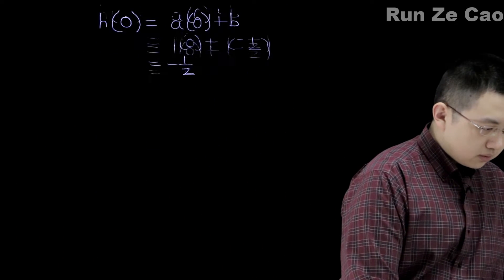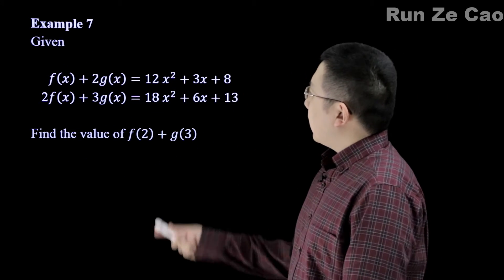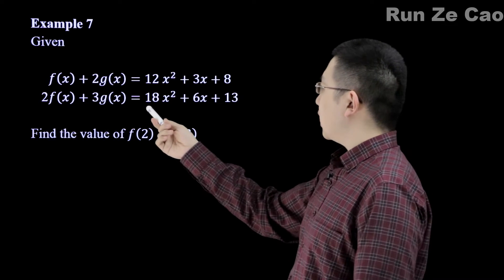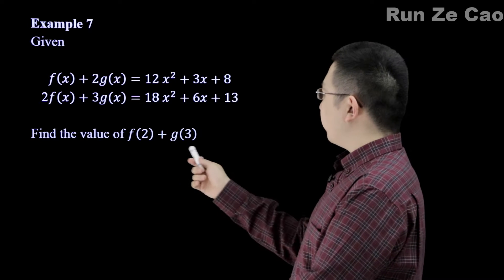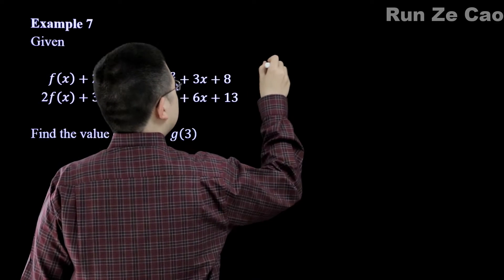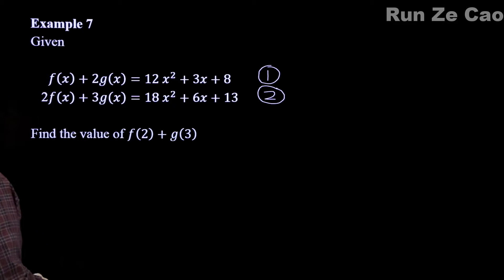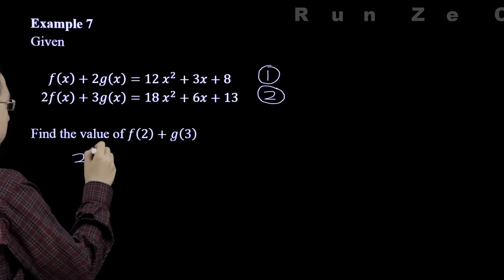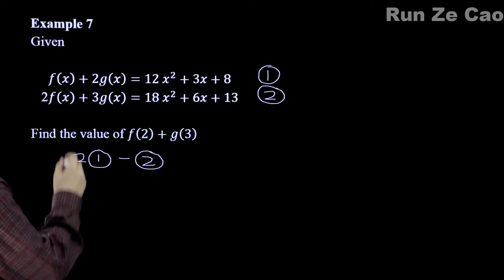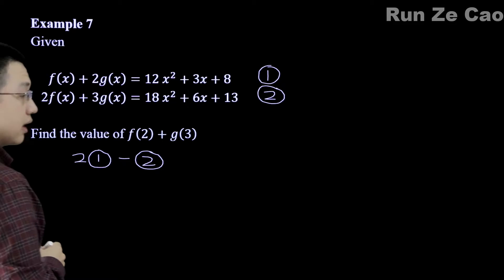Well this next example here we have f(x) plus 2g(x) is equal to this. 2f(x) plus 3g(x) is equal to this. Find the value of f(2) plus g(3). So suppose we label this 1 and we label this 2. What would happen if we took 2 times 1 minus 2. Well then first of all we have 2f(x) minus 2f(x), that cancels right out.